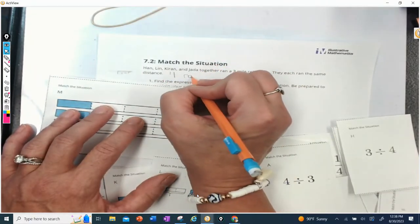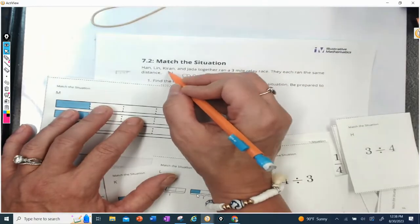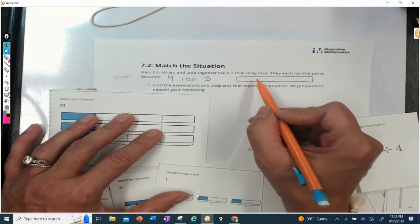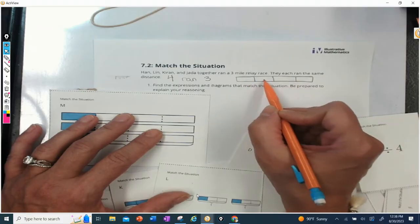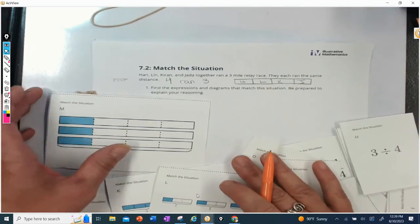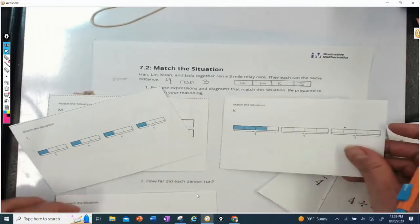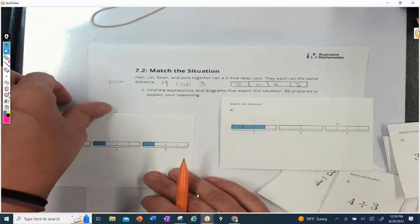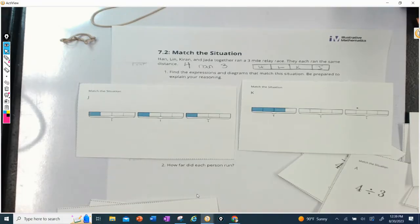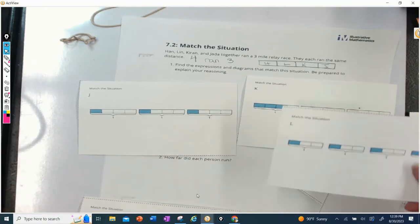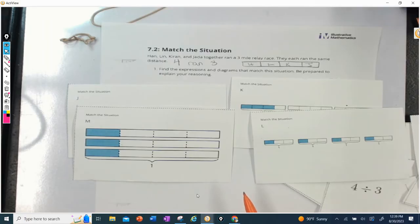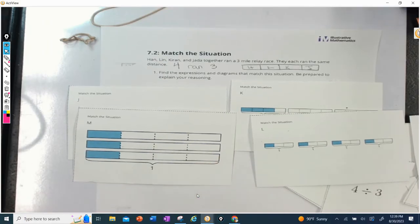So in order to do this one, I'm going to have to think again about the question. What are they asking? So, Jada, one, two, three, four people. Write that down. I have four people. Four people ran three miles, and each person ran the same amount of miles. So for me, I would do a long bar that was three and divide that bar into four pieces so that I knew how much each person ran. So this would be Han, Lynn, Kieran, and Jada. So let's see if we have a picture that looks like that. This one has three bars, and this one has three bars. They did each mile individually.